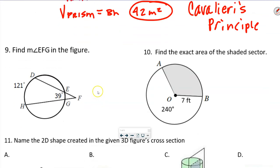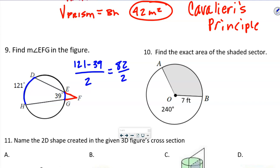This next one says find the measure of angle EFG. We're going to do outside arc minus inside arc divided by 2. So that's 121 minus 39 divided by 2 — that's 82 divided by 2 — giving us 41 degrees.